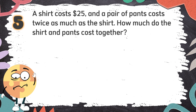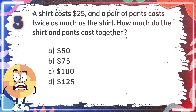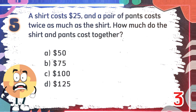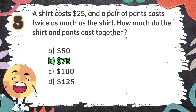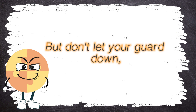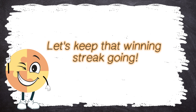Number 5: A shirt costs $25 and a pair of pants costs twice as much as the shirt. How much do the shirt and pants cost together? The choices are: A. $50, B. $75, C. $100, D. $125. The correct answer is B. $75. Remember, every challenge makes you stronger and smarter. Let's keep the winning streak going!